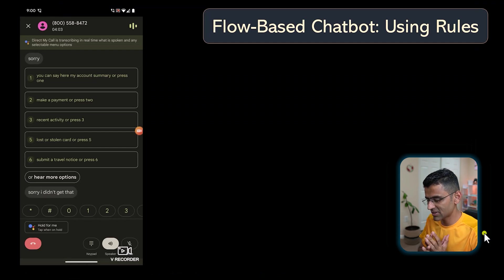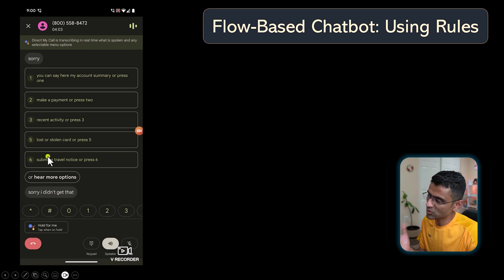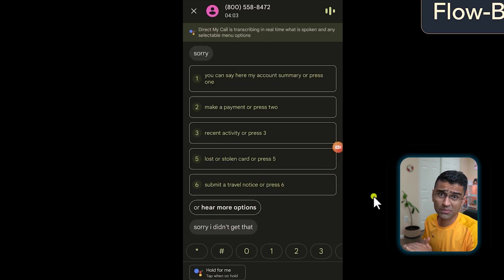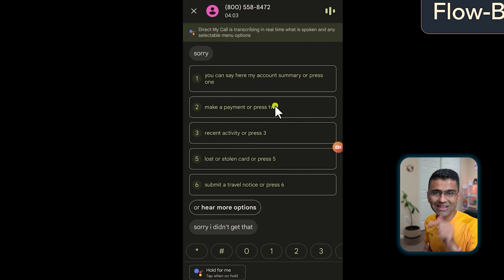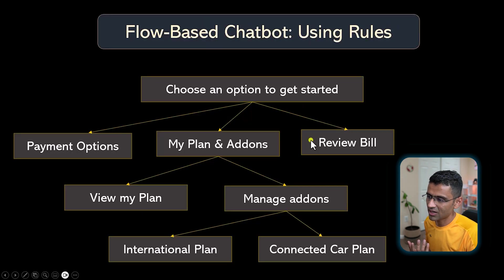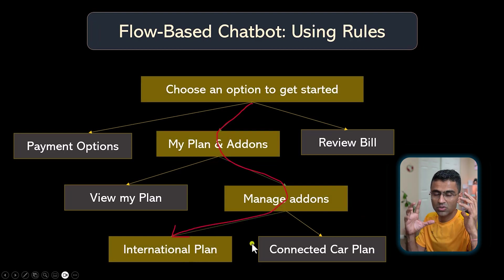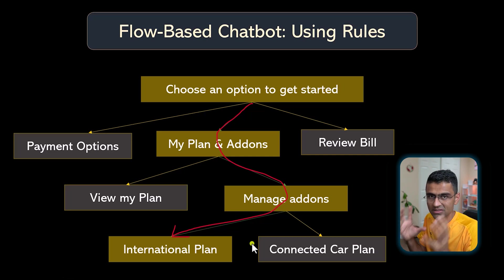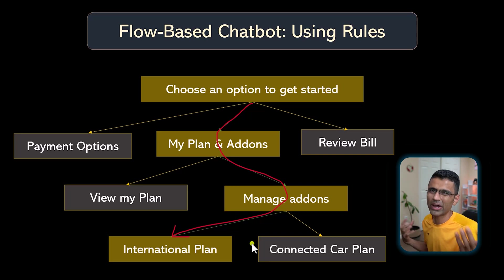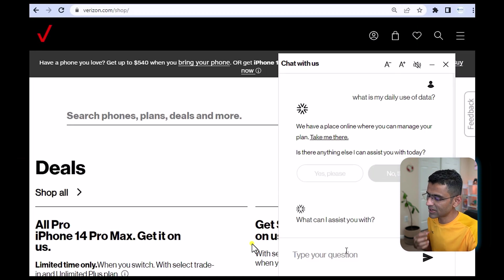In a flow-based chatbot you are presented with fixed options. I'm showing a screenshot of my PNC Bank chatbot — when I call them they give me a fixed set of options. These are nothing but decision trees: you select one option and it gives you two or three more, then further options after that. It's a rule-based system where you select one option and then another. You don't require machine learning for this; it is simple rule-based programming.